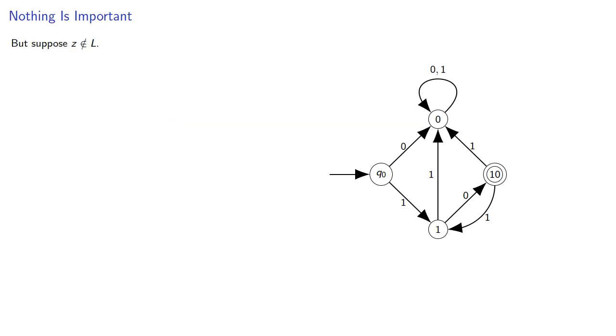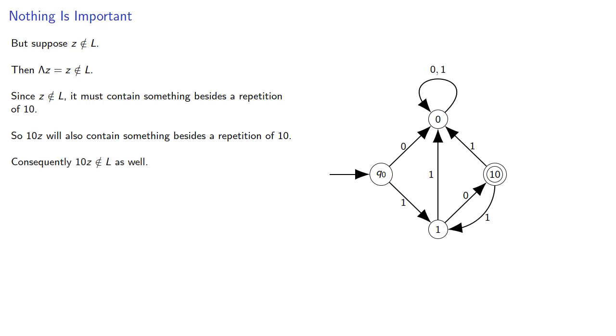Meanwhile, suppose z is not in L. Then λz, again just z, is not in L. And since z is not in L, it must contain something besides a repetition of 10. So 10z will also contain something besides a repetition of 10. And consequently 10z is not in L as well, and so we can't distinguish between λ and 10.